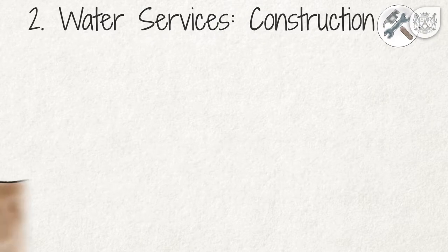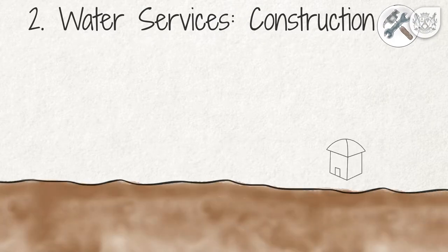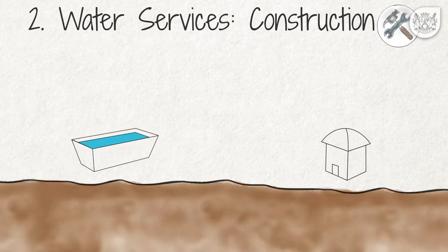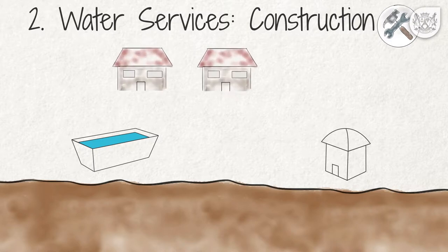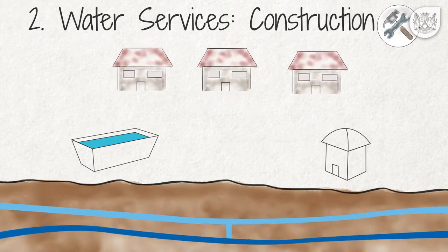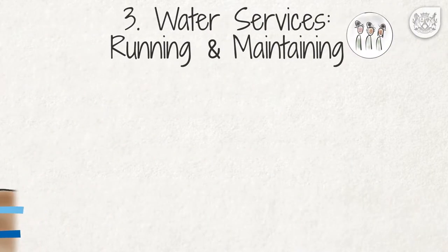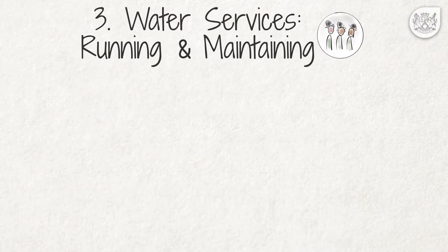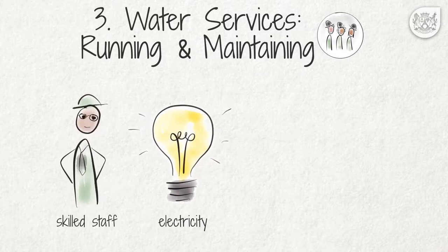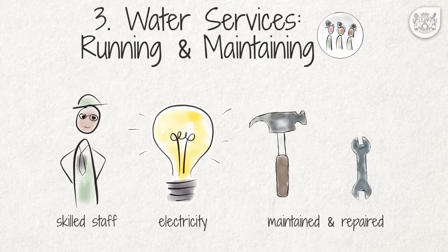Secondly, the water service needs to be constructed. Depending on the circumstances, this could require anything from a dam to a borehole, a purification plant, a water reservoir, pumps, meters and a network of underground pipes. Thirdly, running the water system requires skilled staff and electricity. The system also needs to be regularly maintained and repaired when necessary, which also requires tools and materials.